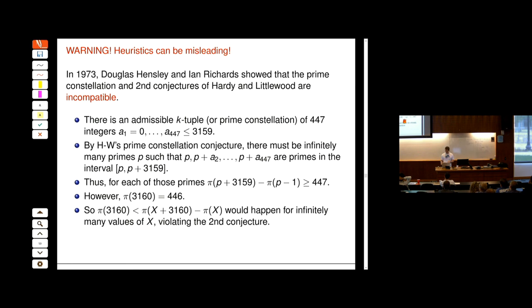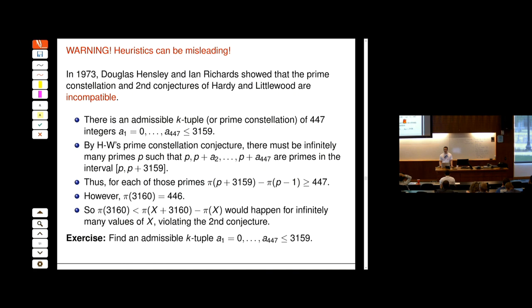Harris will give a tour of some software, and I'd like you to try to find what this admissible 447-tuple is — I haven't seen it. Not only that, I'd like you to explore whether this is the smallest such k-tuple that would violate this pair of Hardy-Littlewood conjectures. I'm not sure that's the smallest one, so that's an interesting computational problem.